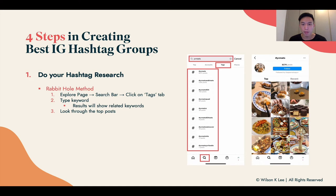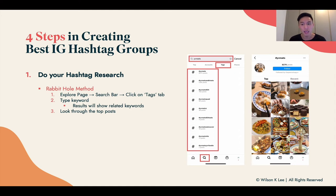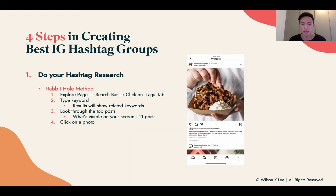Then look through the top posts of YVR eats — on the right-hand side you can see the content that other people have logged under YVR eats. Click on one of these top images. There are going to be more than 800,000 posts — that's 800,000 pieces of content that people have created on YVR eats. We want to pick the top one because we want to see what other hashtags they're using.